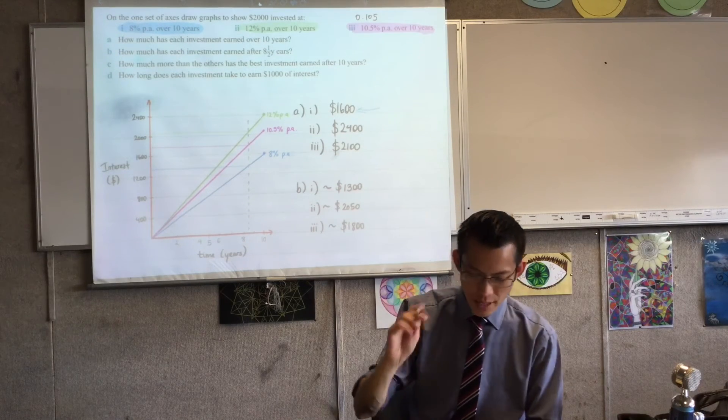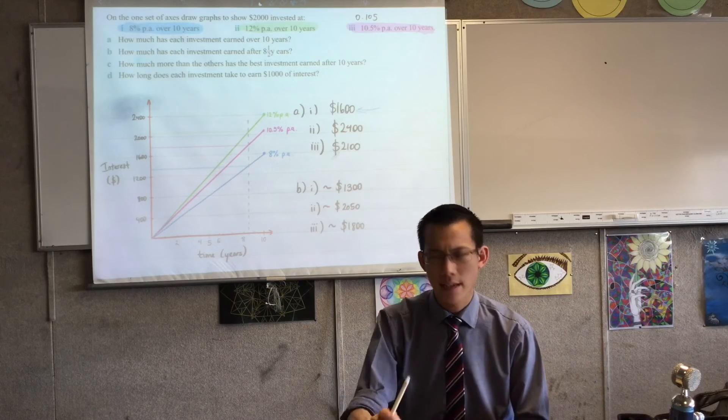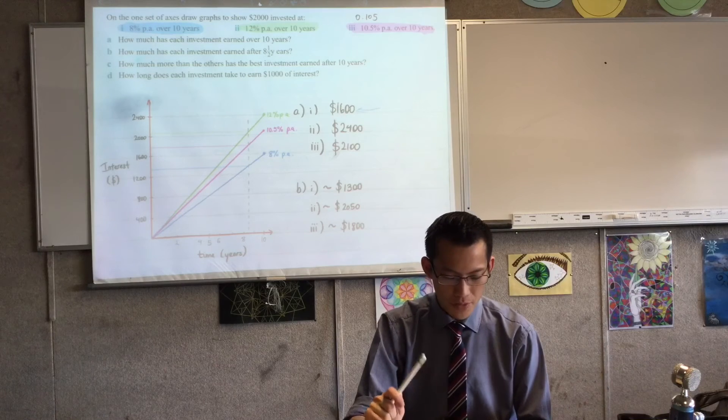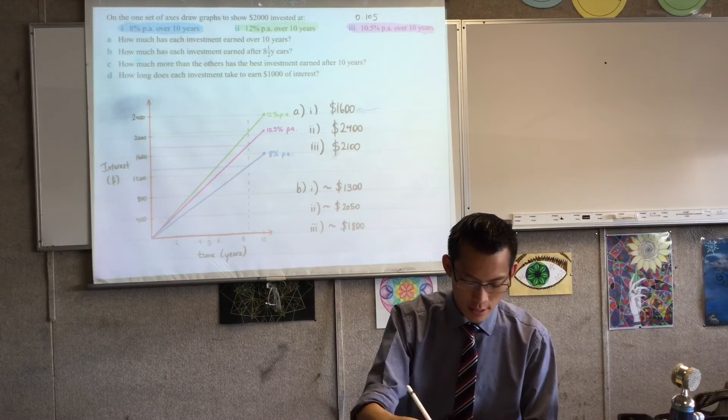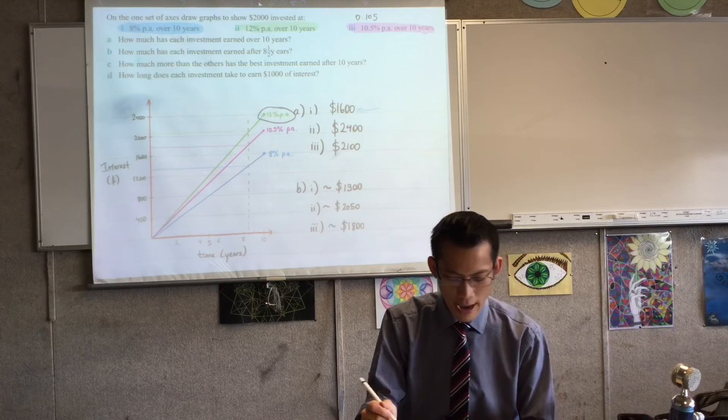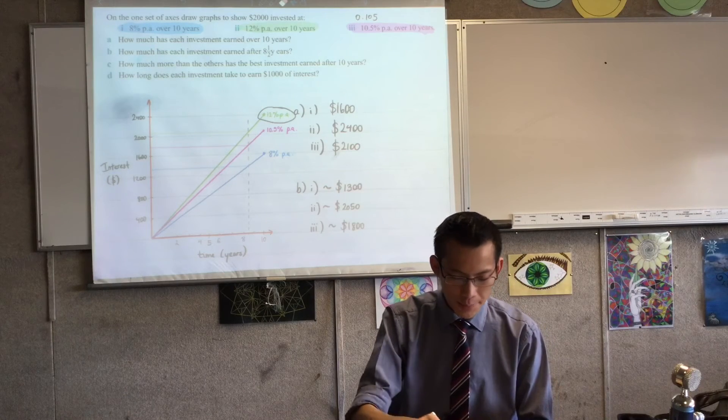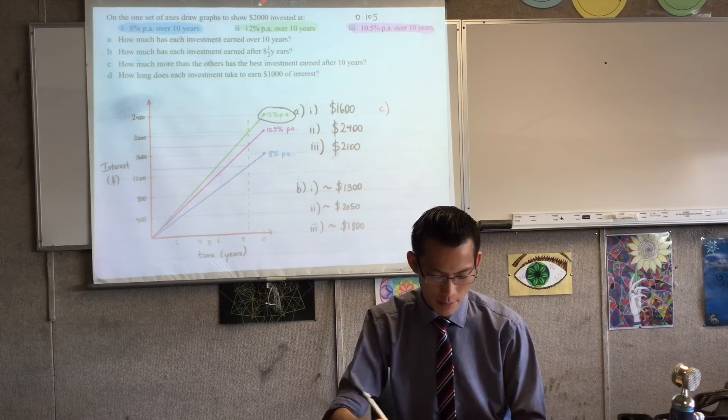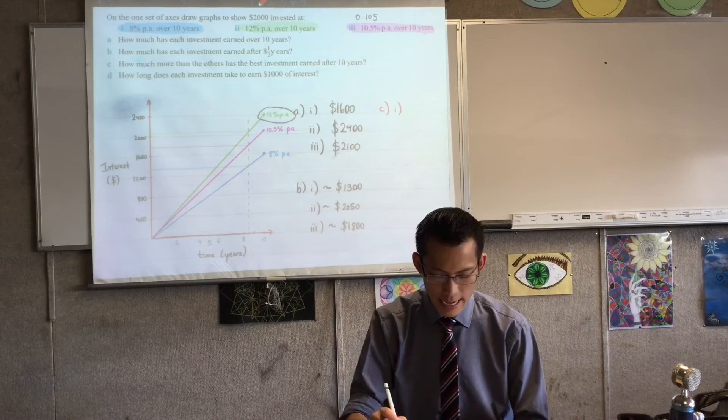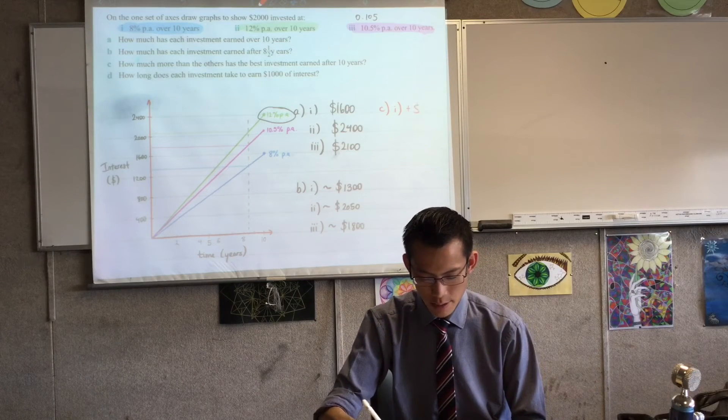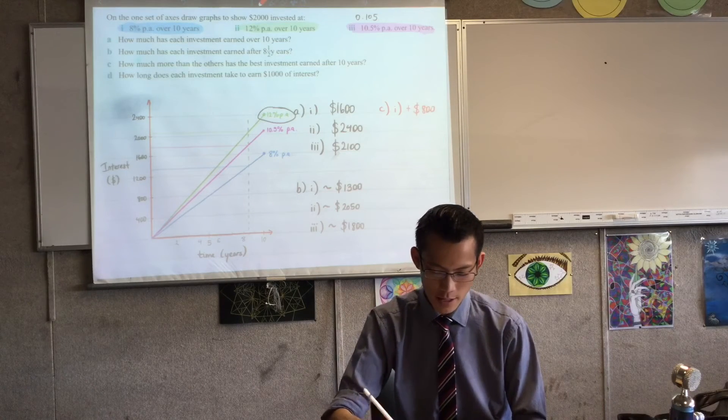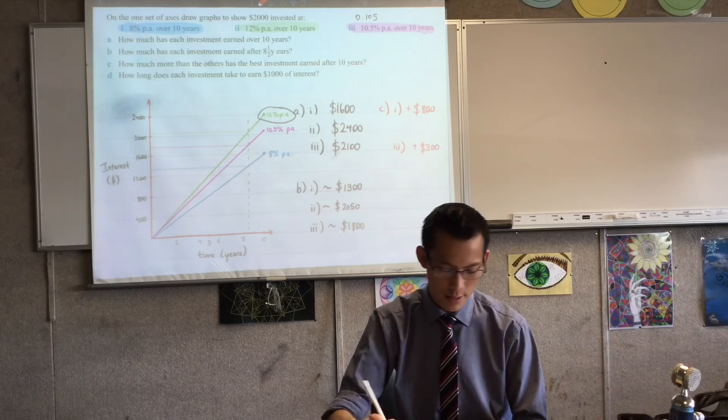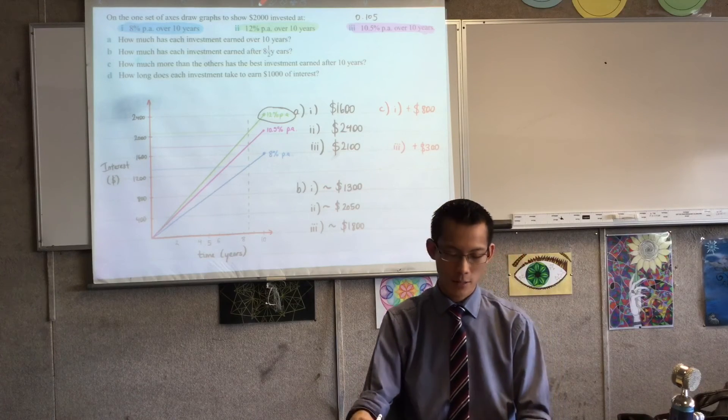Part C, how much more than the others has the best investment earned after 10 years? So the best investment clearly is this top one here, this 12% per annum. And I've actually already crunched all the numbers. So you can see what's the difference. So this is now I'm answering part C. For part one, it's earned $800 more, right? Plus $800 more than that investment. And for part three, the discrepancy, the extra amount is going to be plus $300. So that's how much more the best investment has earned.